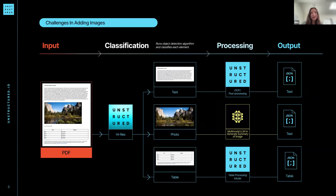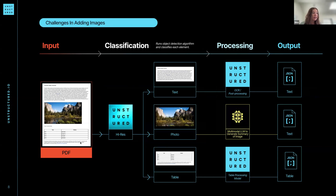There are also specific challenges for adding images. Here's an example of a pipeline we use for processing a PDF in our platform, which is currently in beta. We have a high-res model that extracts documents containing images, text, and tables. Otherwise we have a fast pipeline if the PDF only has text — you don't want to use a more powerful model than you need to, in order to keep computational costs down.